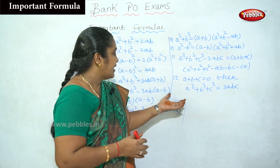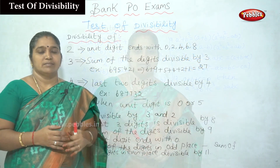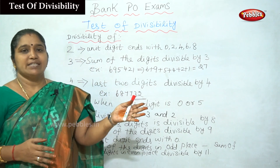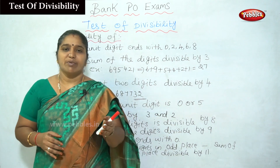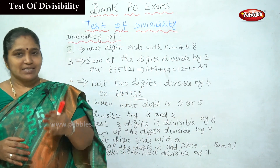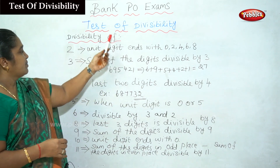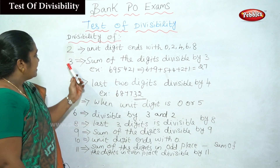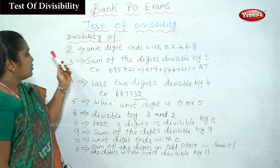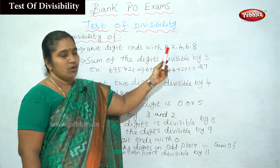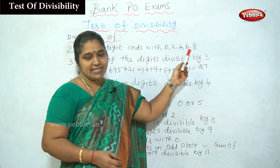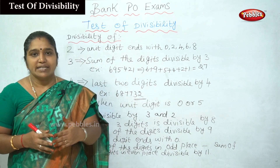These are the formulas needed for bank exam problems. Now the next part is the divisibility of digits. They can ask whether a digit is divisible by 3, 11, or 9. For that we need to know the divisibility rules. For divisibility by 2: if the number ends with 0, 2, 4, 6, or 8, then the number is divisible by 2.